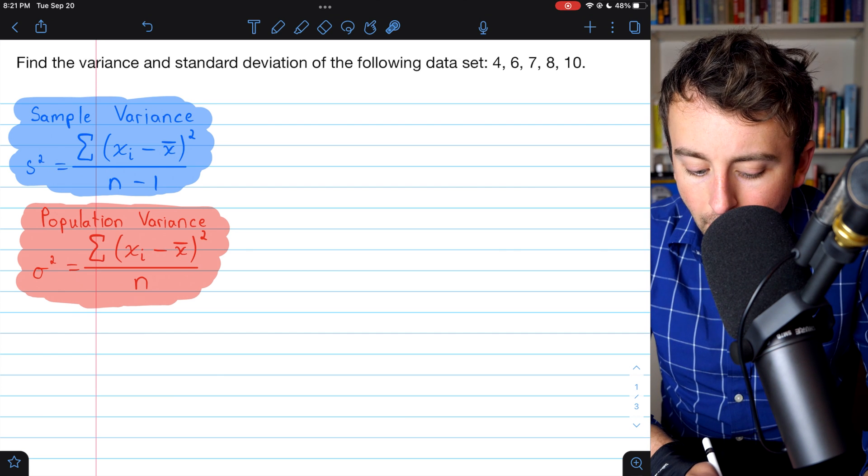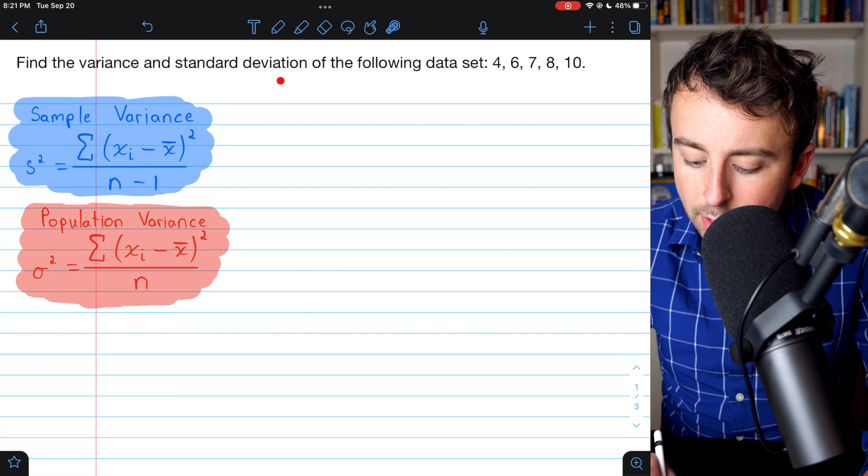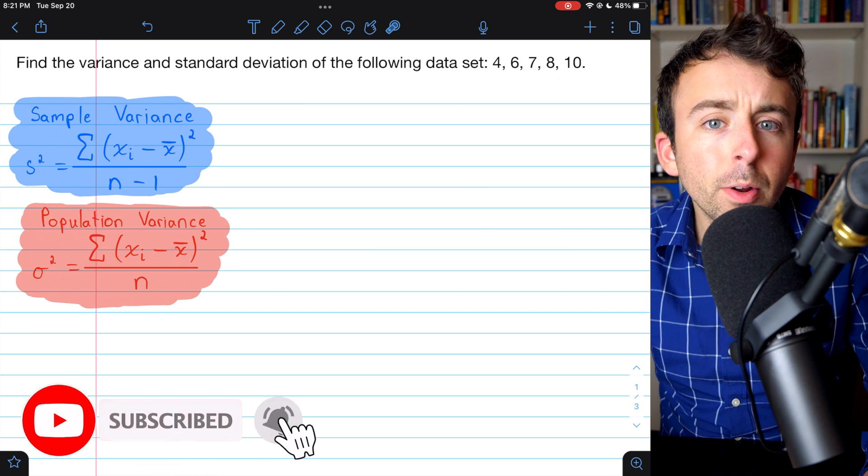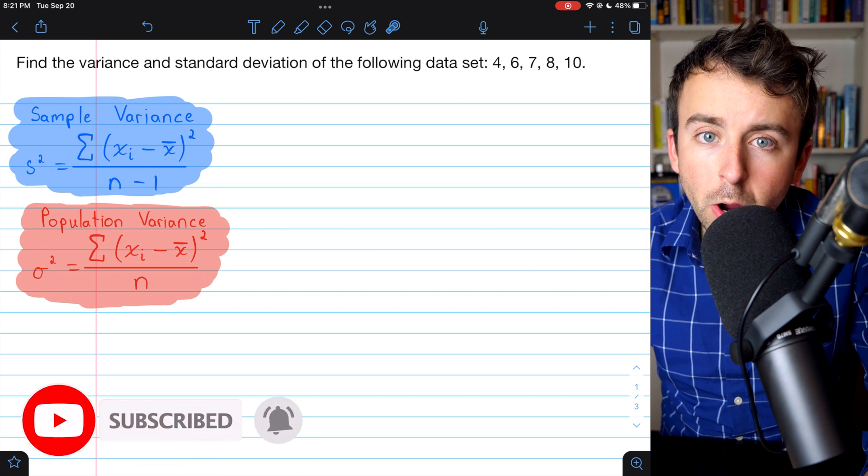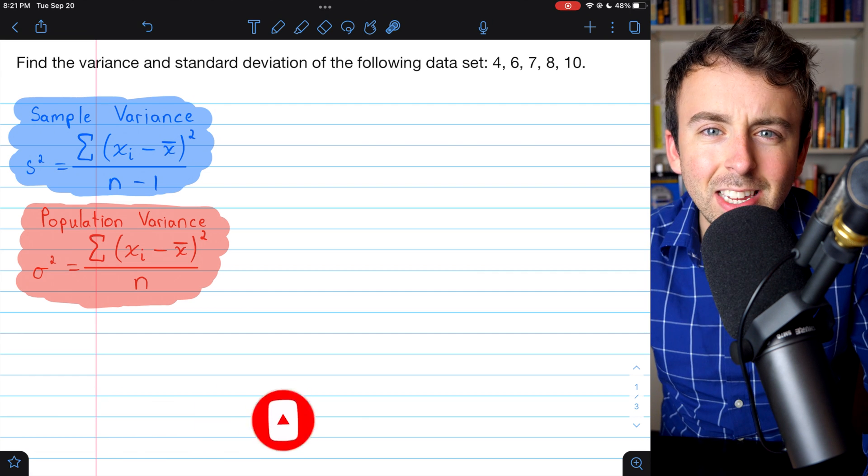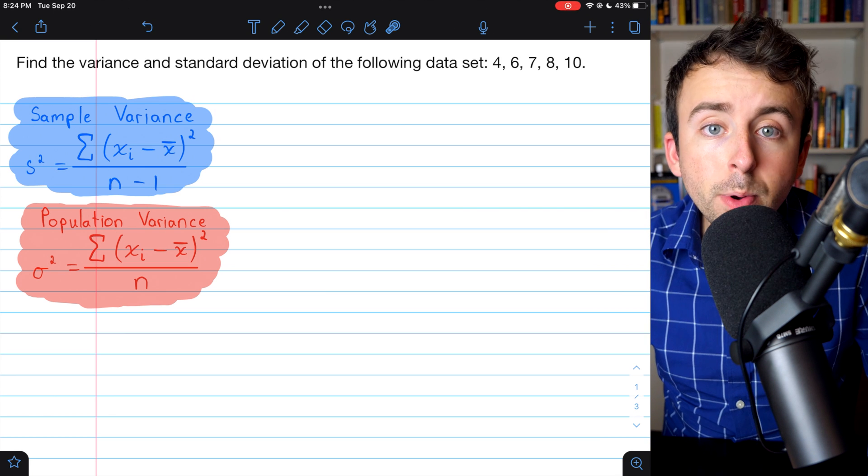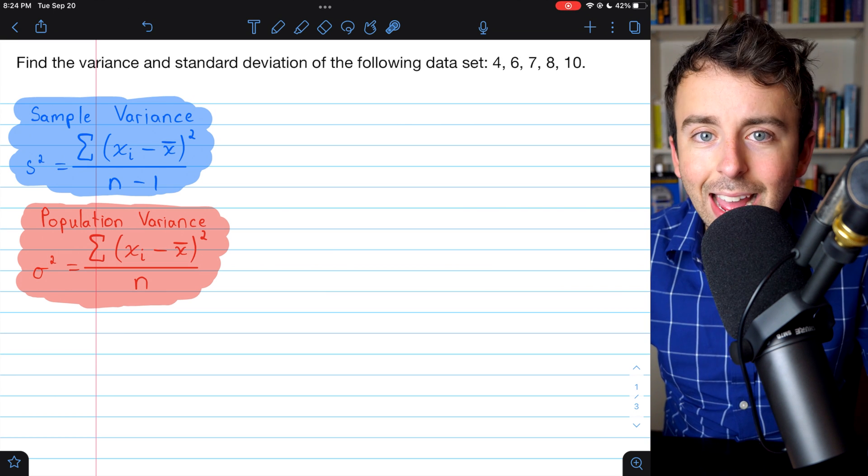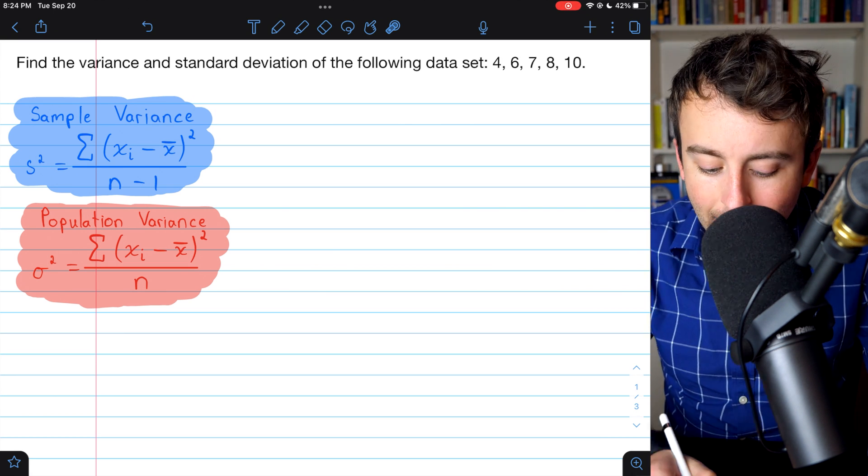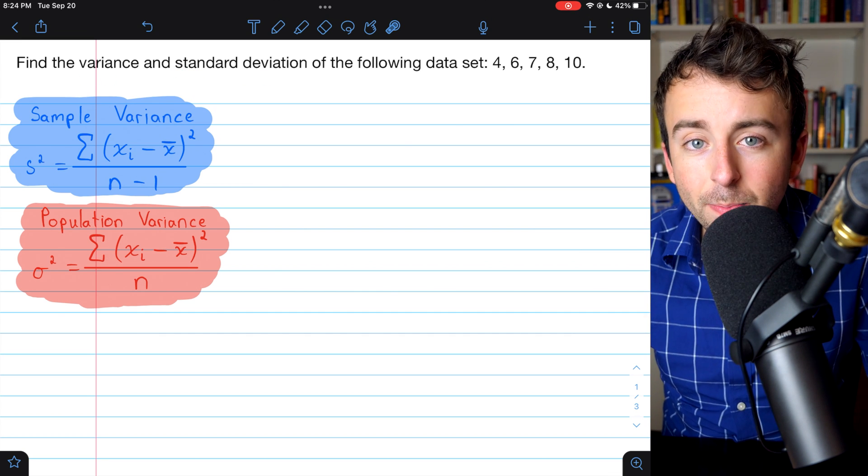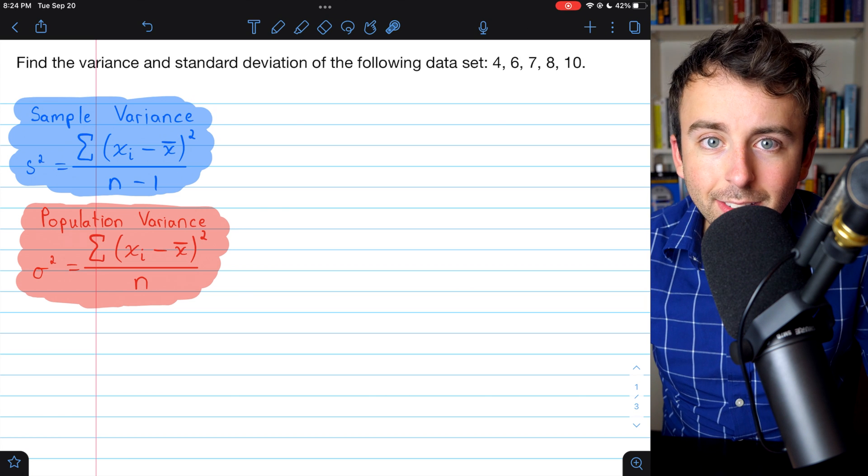We're going to go over how to find the variance and the standard deviation of a data set. We'll do this one together, then I'll give you an example to try on your own and show you the answer. You can see if you did it right. The variance and standard deviation are both measures of how spread out data is, but we need to calculate the variance in order to get standard deviation. So we'll begin with variance.